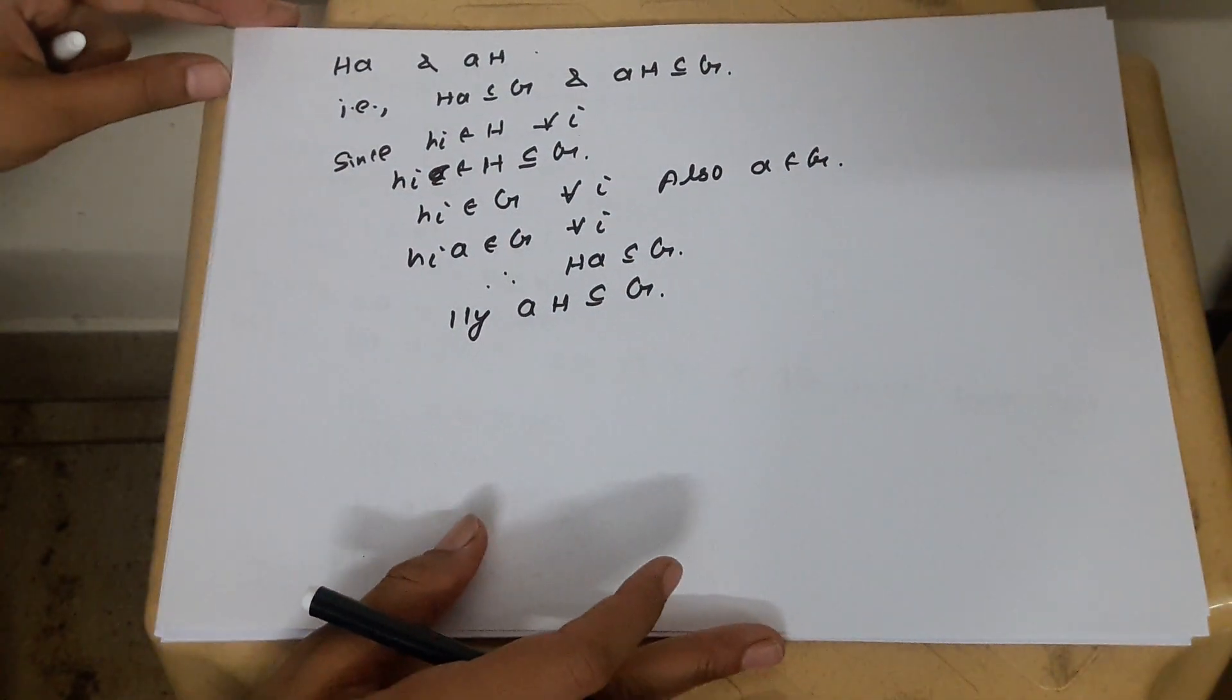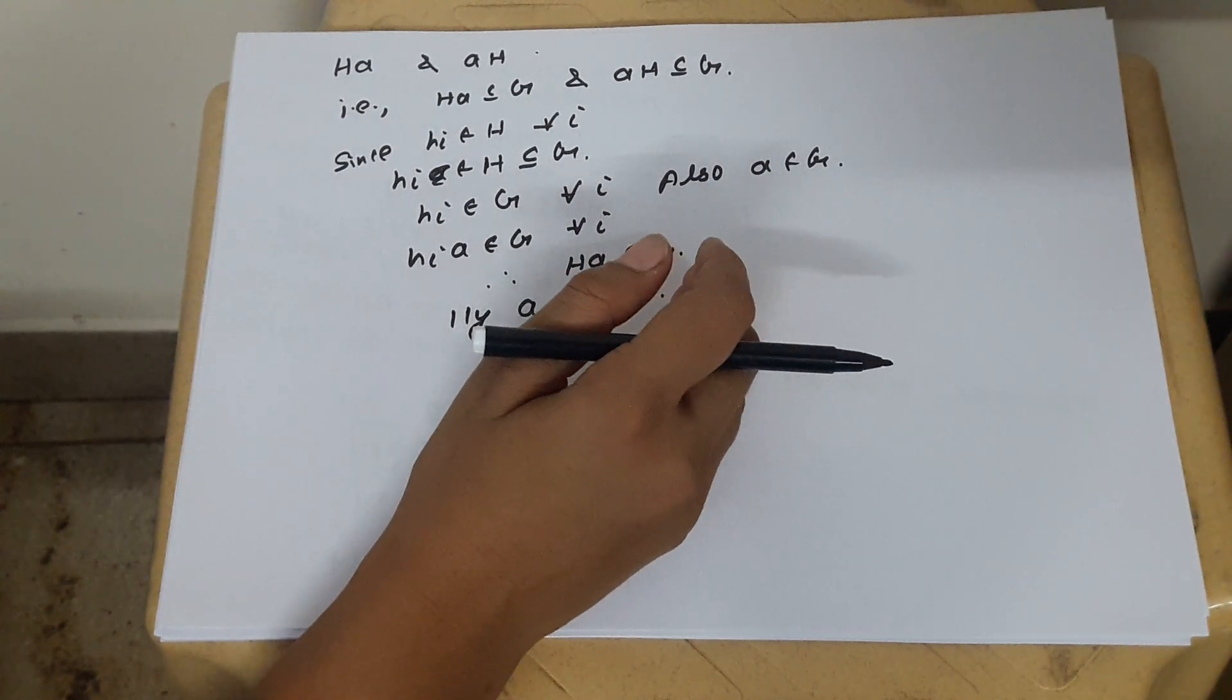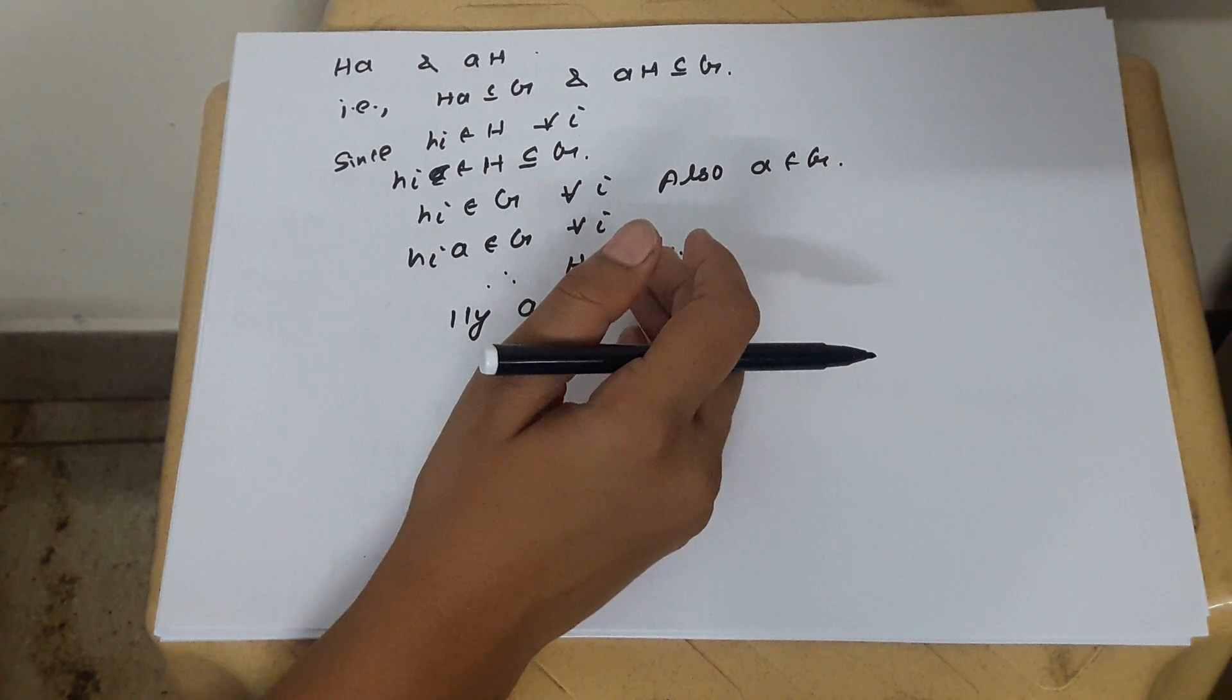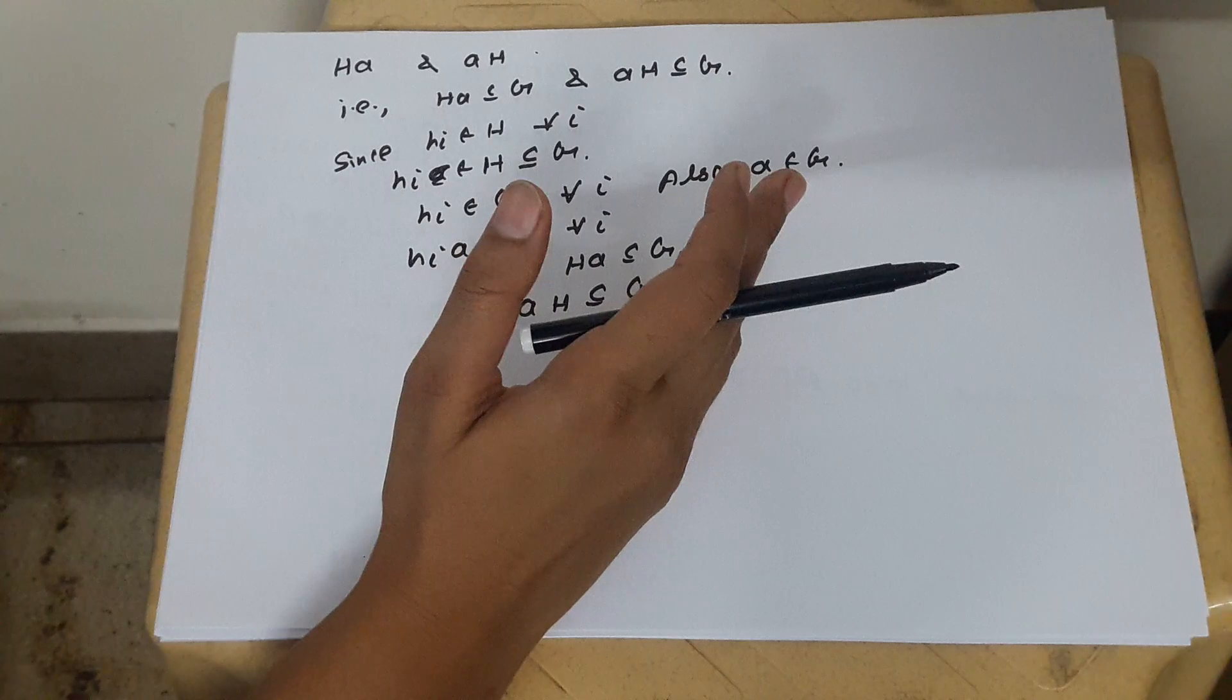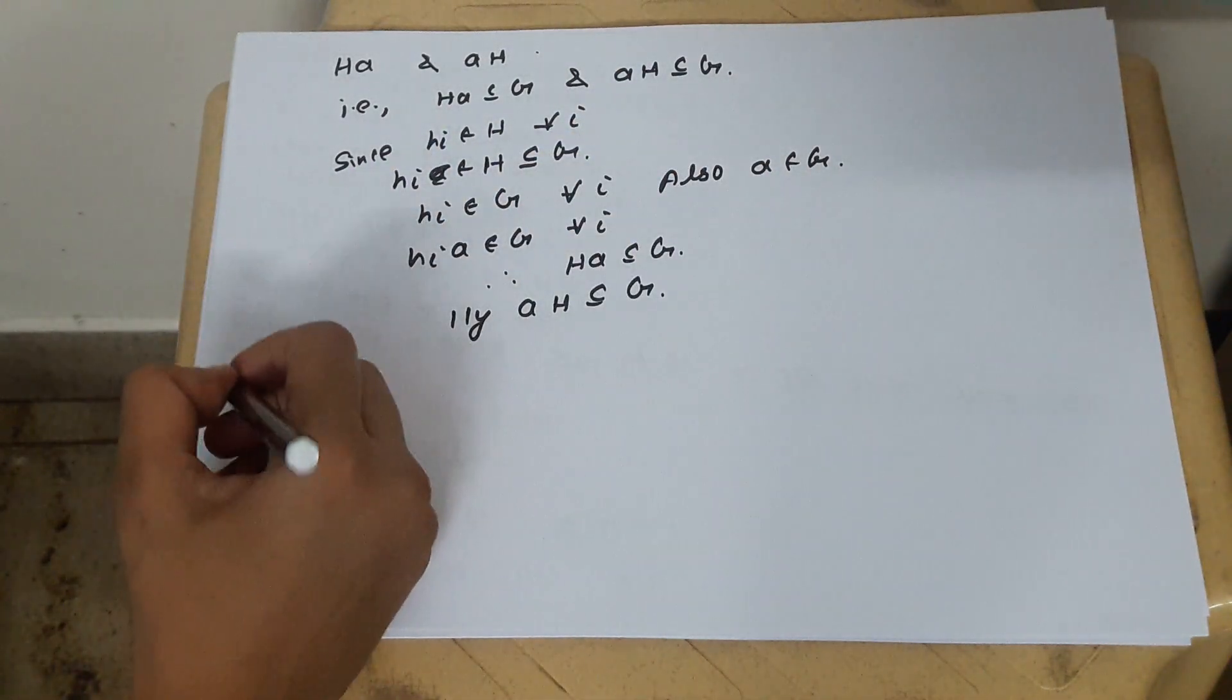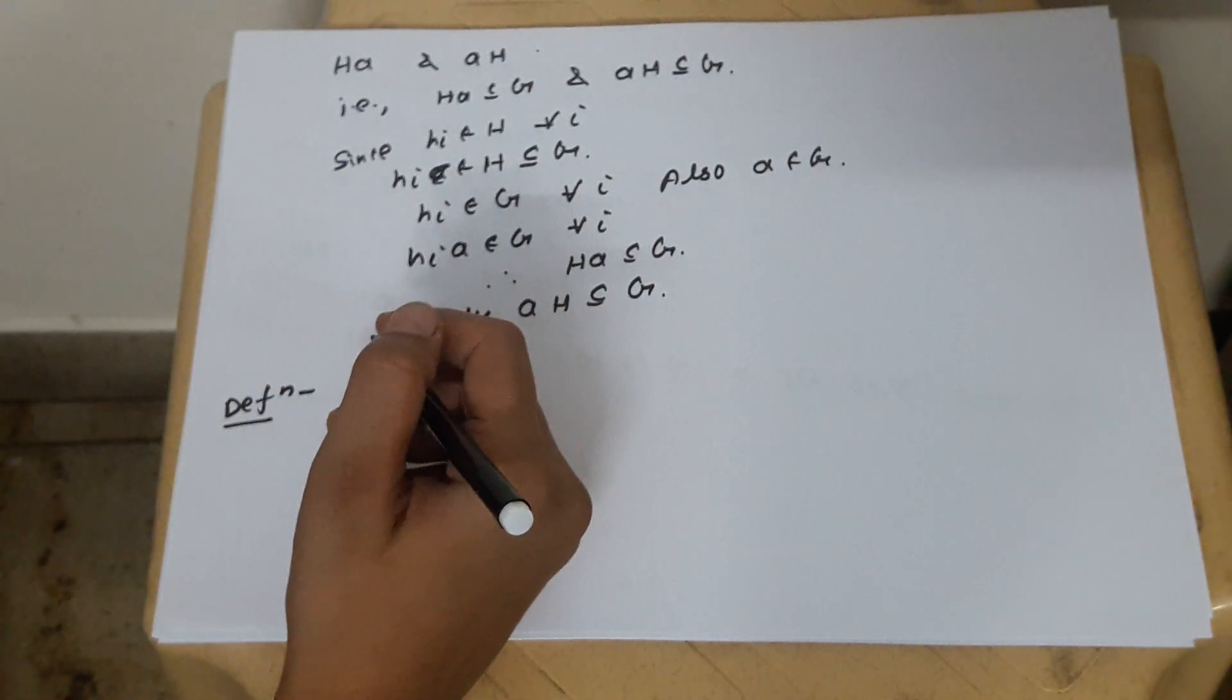There are so many properties related to cosets that I am going to discuss while I will do the properties of cosets. Before that, I will explain some examples also related to that topic. In this video, explanation part is done. Now, I am going to give you the formal definition of cosets.